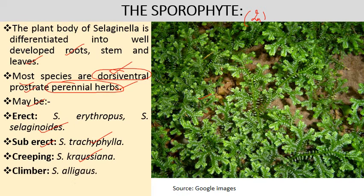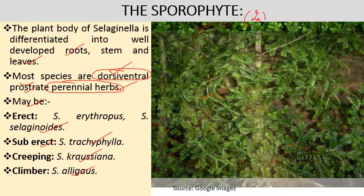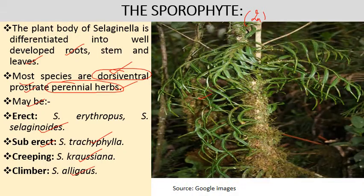Some species of Selaginella are prostrate, for example Selaginella krausiana, which grows horizontally on the surface of soil. Some species are climbers, for example Selaginella elegans.